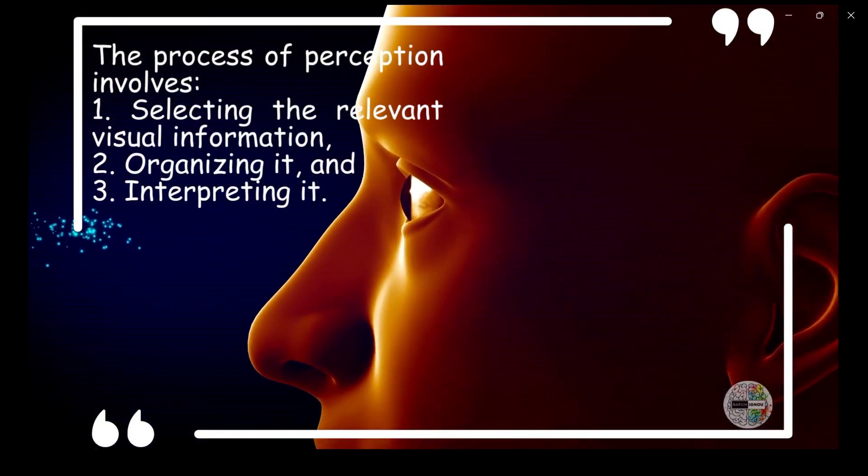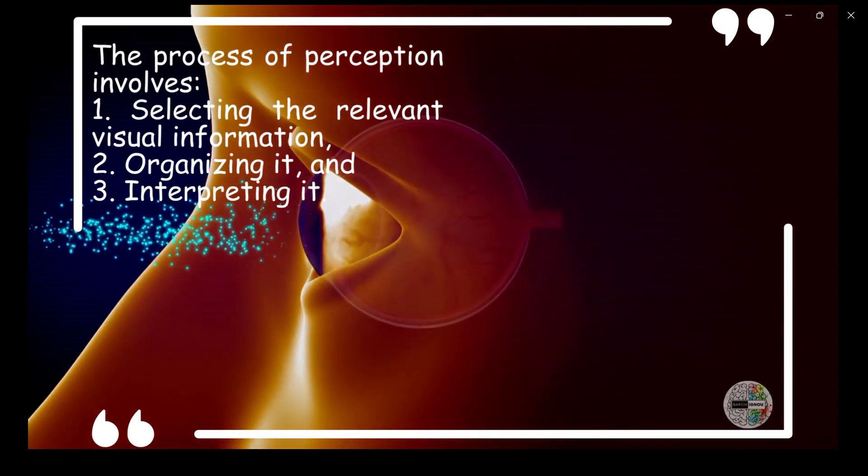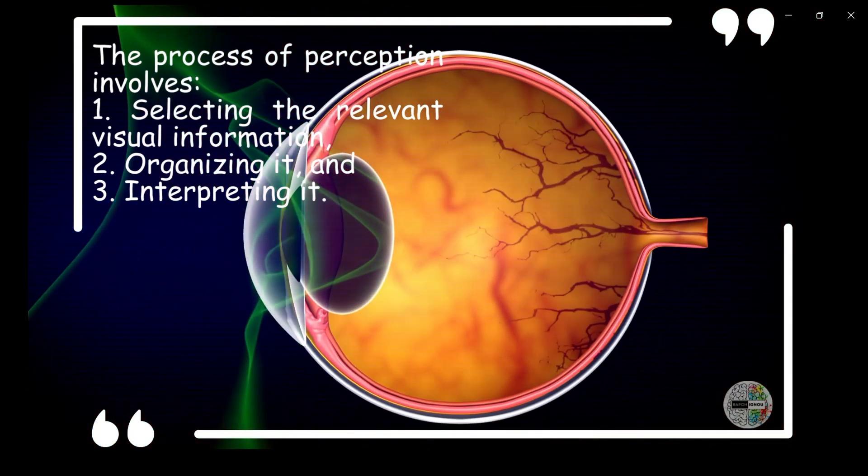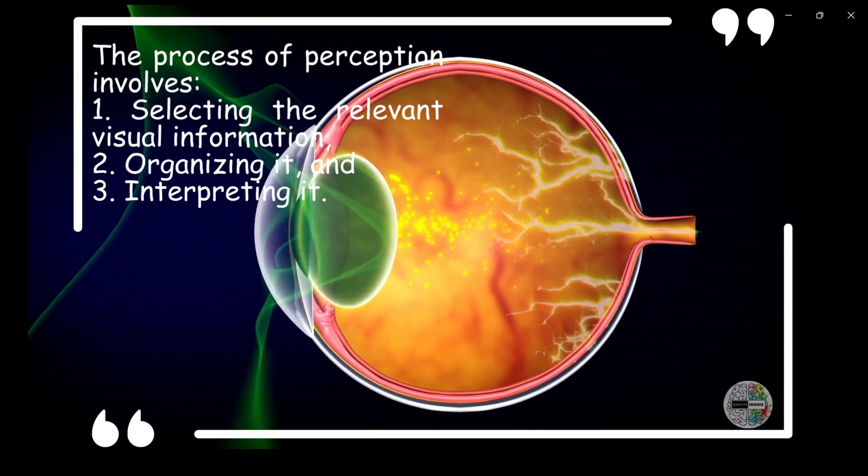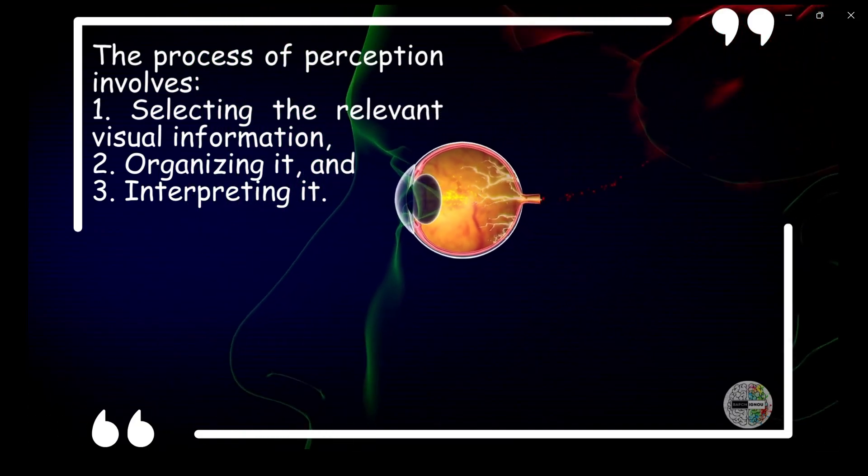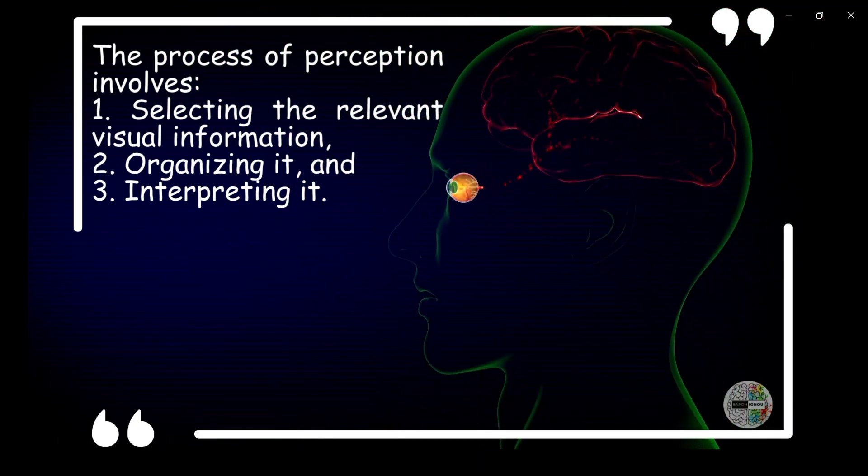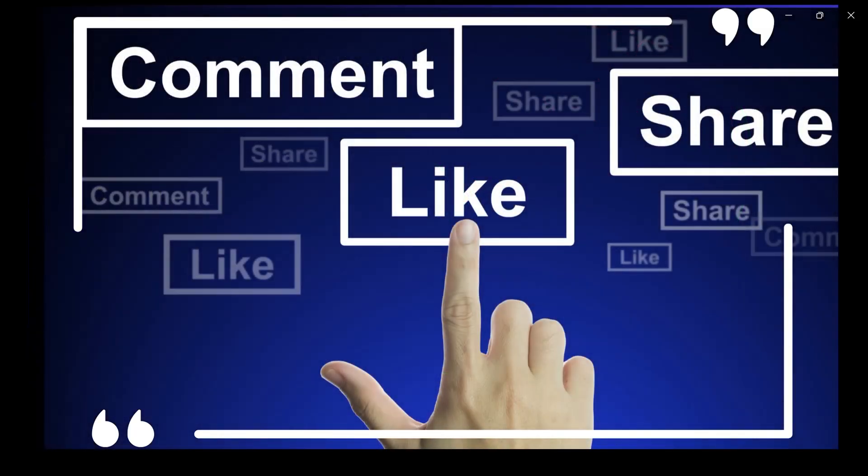So in simple terms, the process of perception involves selecting the relevant visual information like the faces in the crowd, organizing it and interpreting it. This process enables you to recognize and find your friend in a busy park. Just a reminder that if you like our videos, please do like and share and comment on it so that the algorithm picks up the fact that you like our videos.